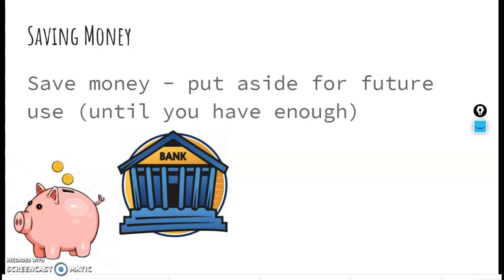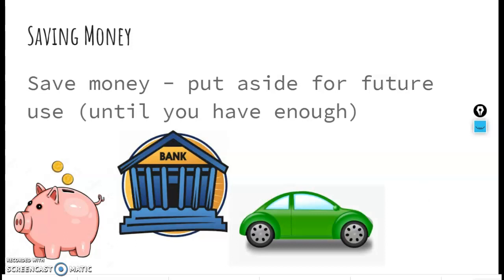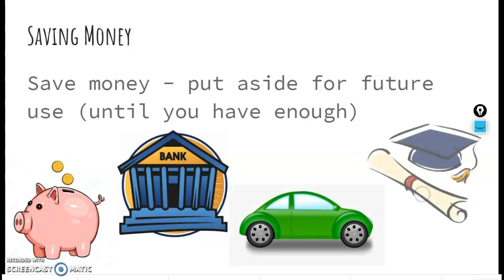What might you want to save your money for? Usually you save money for things that are more expensive — something you don't have enough money for all at one time. Adults might save their money for a car, which costs thousands of dollars, or to go to college, which is very expensive as well. So saving means to put aside money for future use, usually because you don't have enough yet.